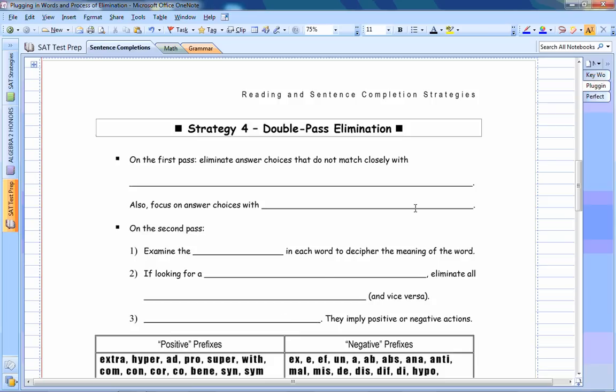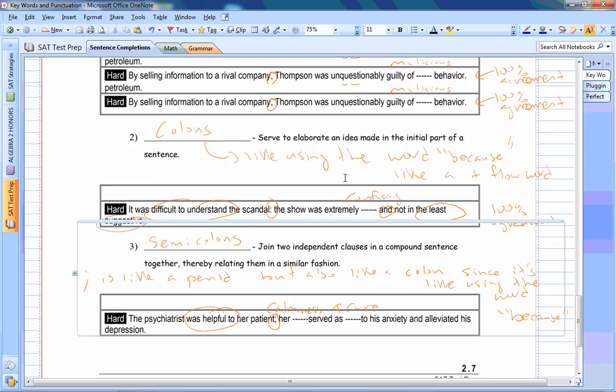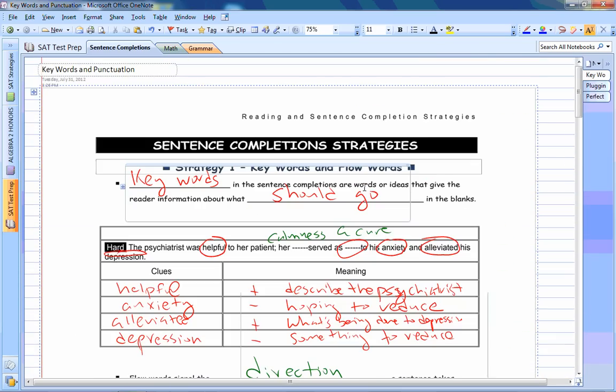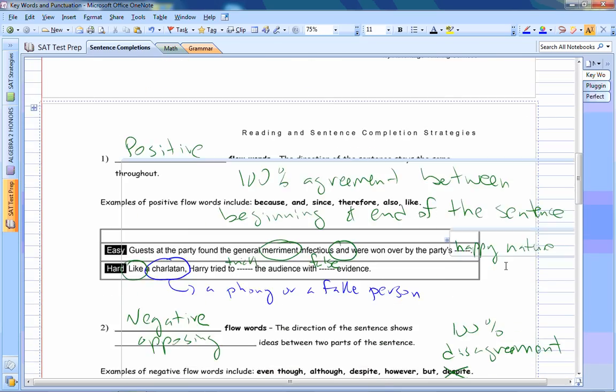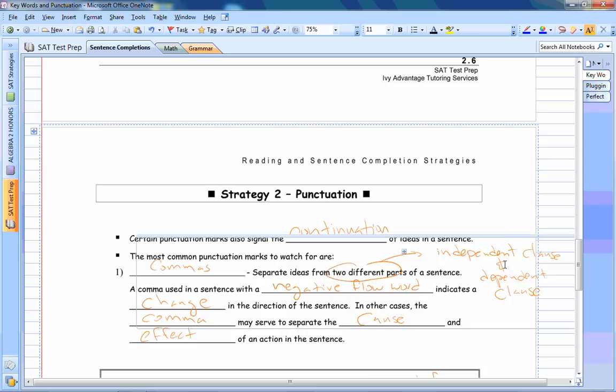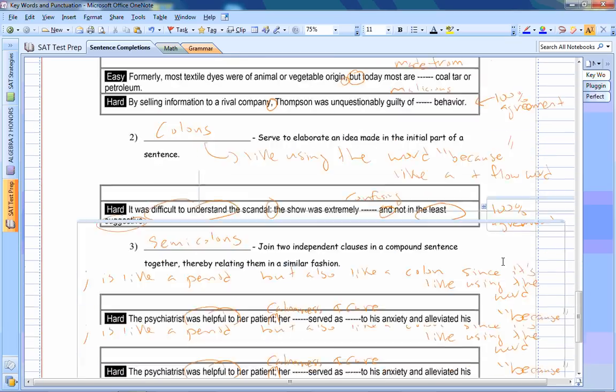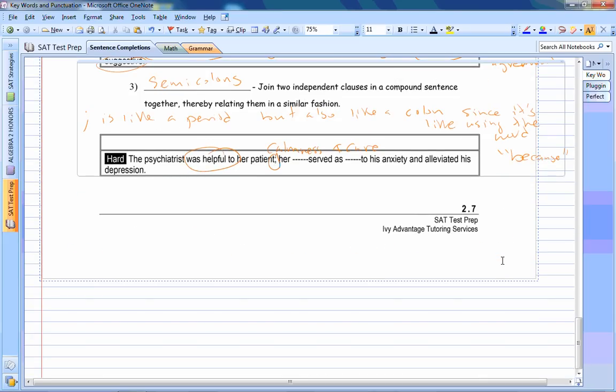If you recall, strategy one had talked about keywords and flow words. Strategy two was on punctuation. And again, you want to focus on those things so you have a really good understanding of what word to put in the blank.